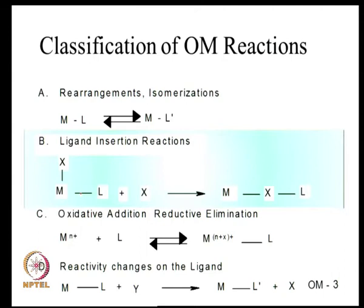In this particular case, as we have written it, the M-L bond is the bond that is broken and then the X group is inserted in between. So let us take a look at the types of reactions that can happen and what are the pathways by which these reactions occur.